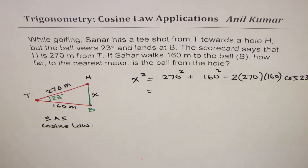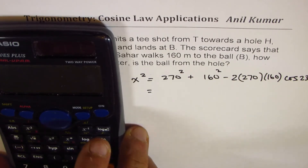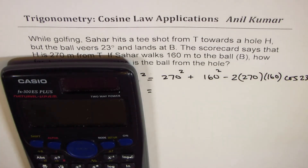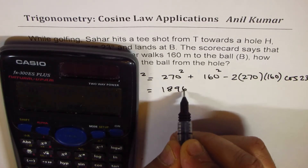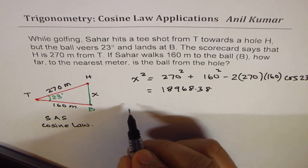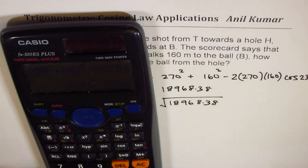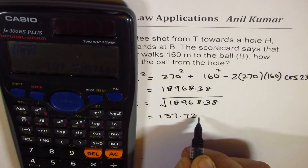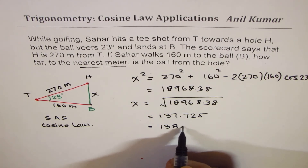Straight away we can get our answer. It is 270 squared plus 160 squared minus 2 times 270 times 160 times cos 23, which equals 18968.38. The distance X is equal to the square root of 18968.38. The square root of our answer is equal to 137.725. We have to round it to the nearest meter, so we get 138 meters as our answer.